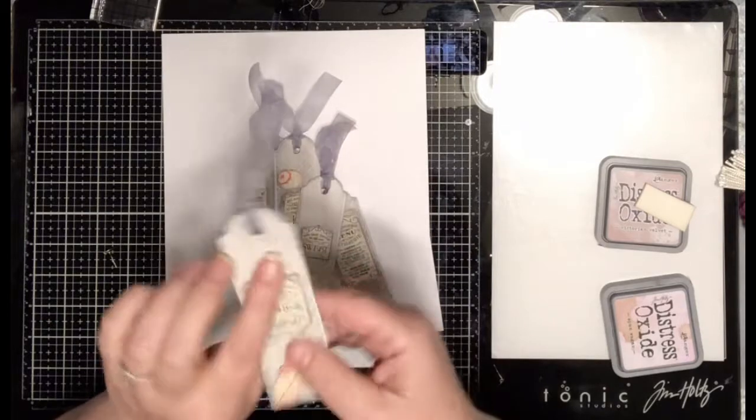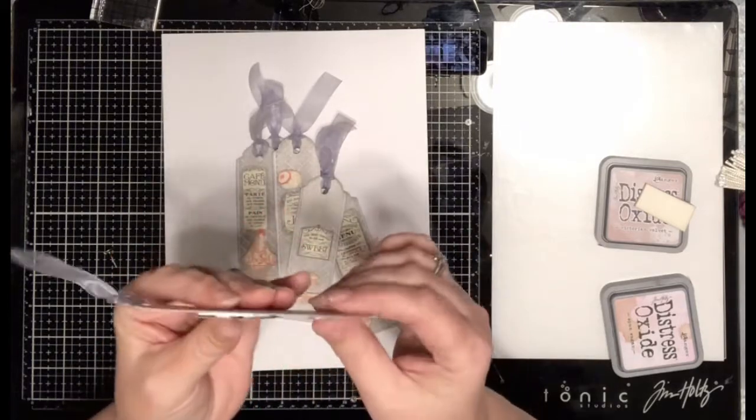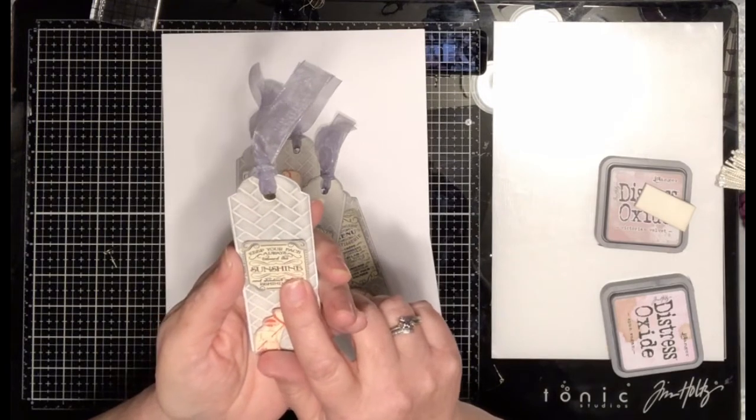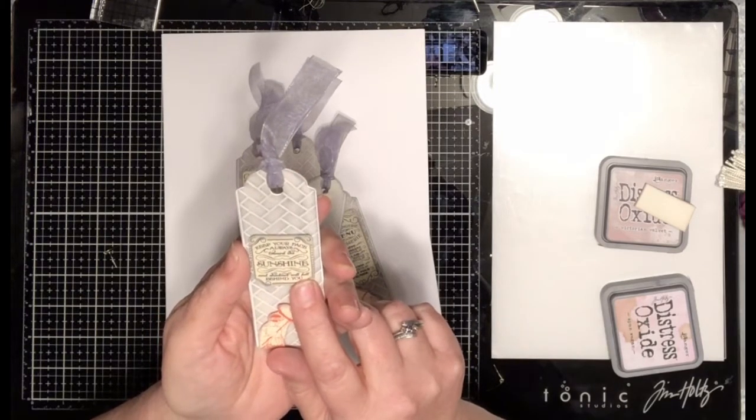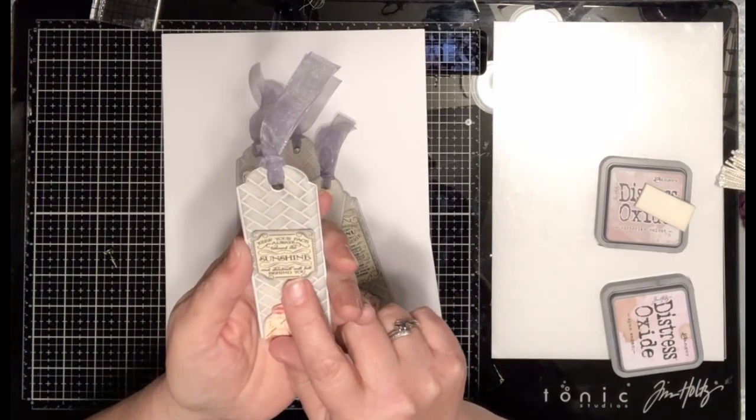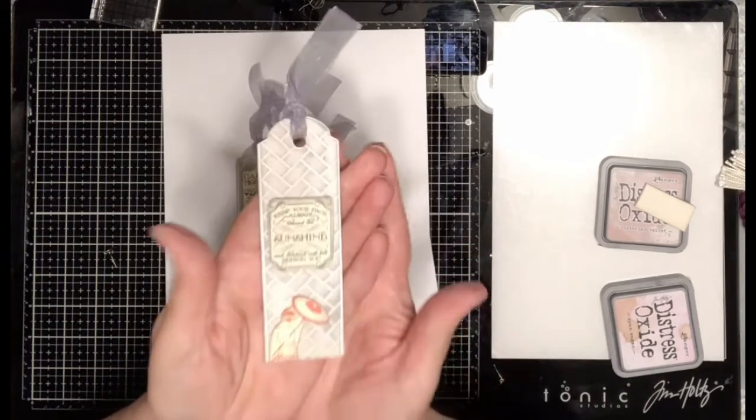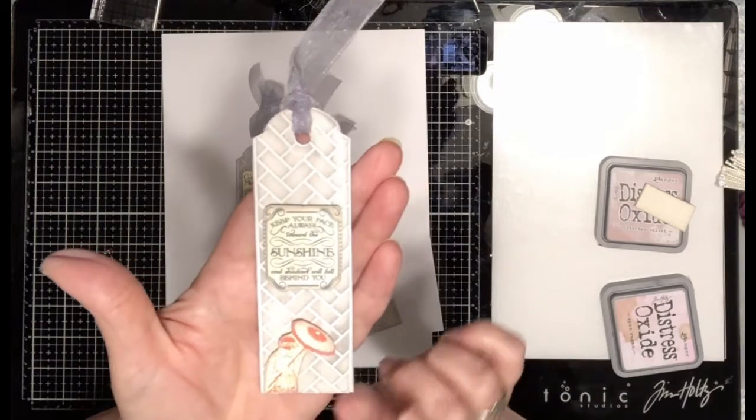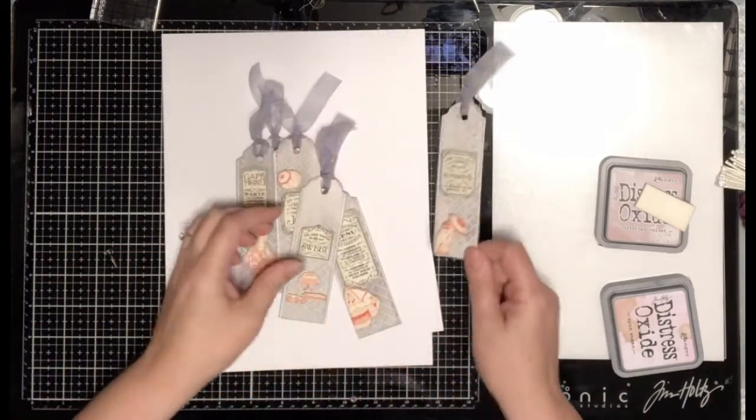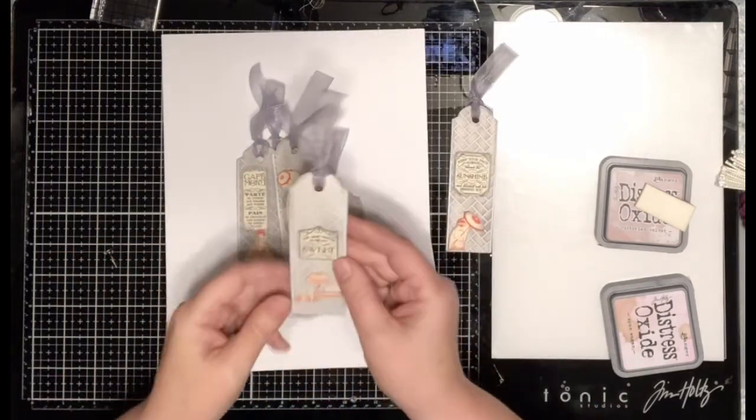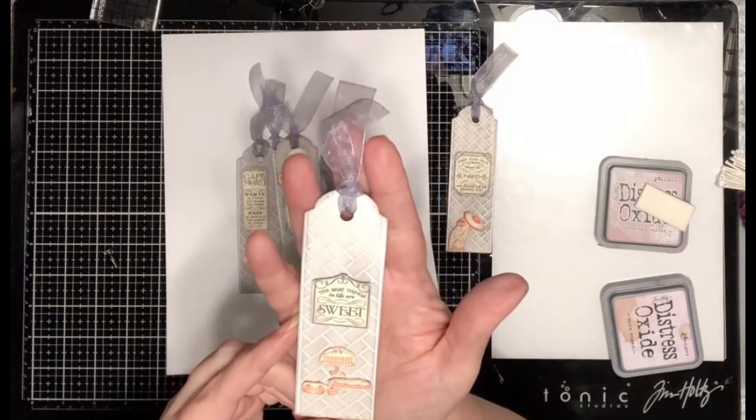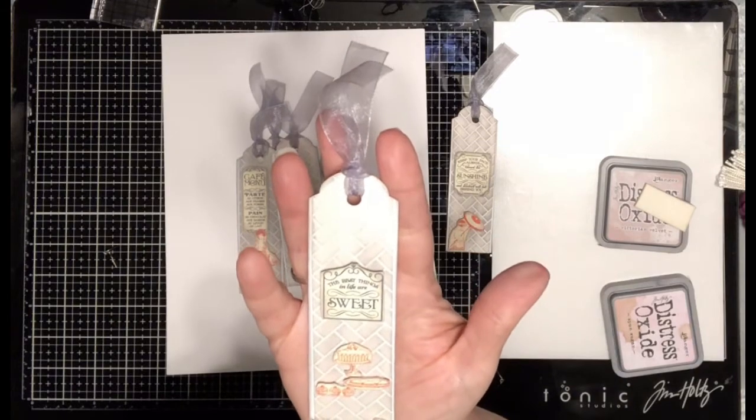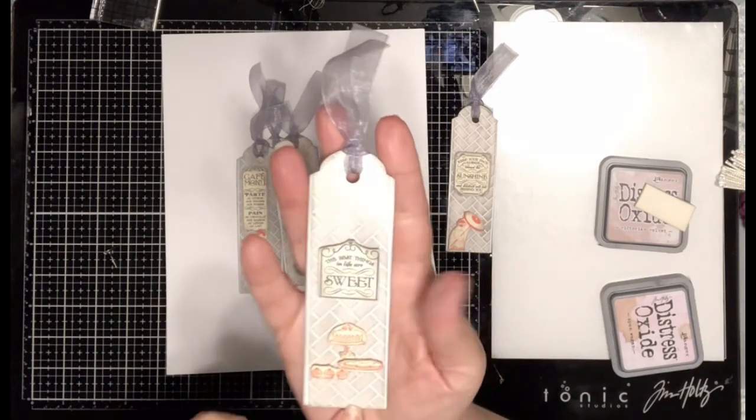Each of these I popped up on a little bit of foam. Like this one says 'Keep your face always towards the sunshine and shadows will fall behind you' and then I have it where it has the little vintage woman holding her umbrella there blocking the sun. This one just says 'The best things in life are sweet' and it has some little sweets there, a cake, some little pies, and some cupcakes.